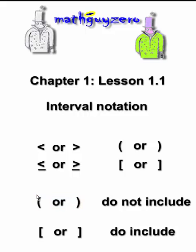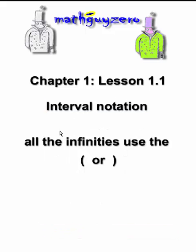The parentheses mean do not include the numbers, whatever it's by. Okay? And the brackets means that you do include the numbers it's by. And whenever you're dealing with any of the infinities, and yes, there's more than one infinity, always use the parentheses. So when you have an interval notation like that, you're literally talking about the set of real numbers. That's it.